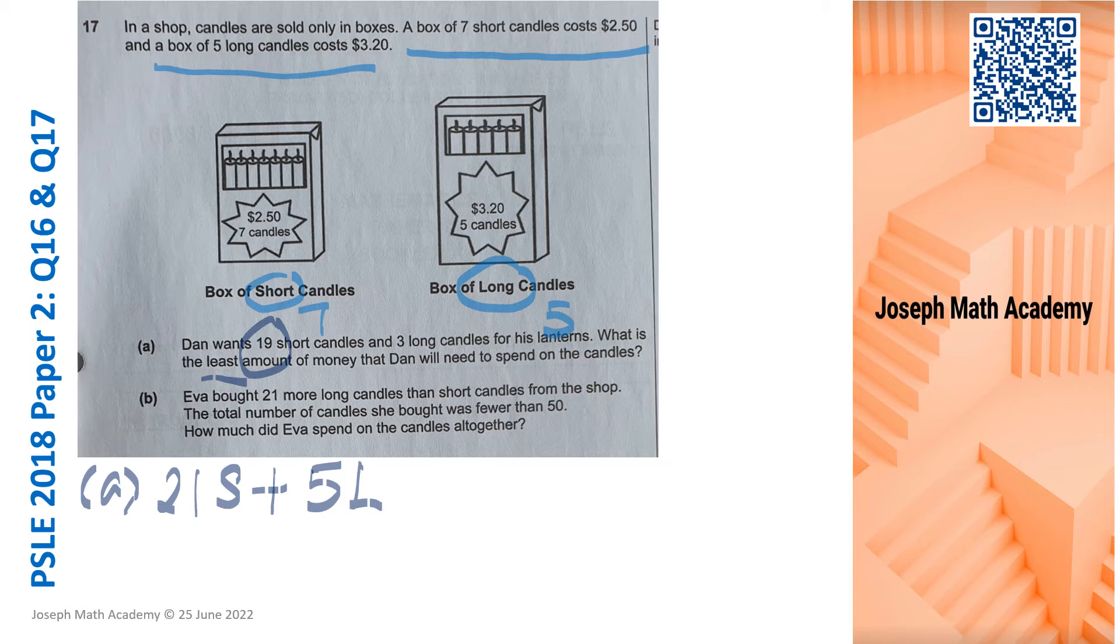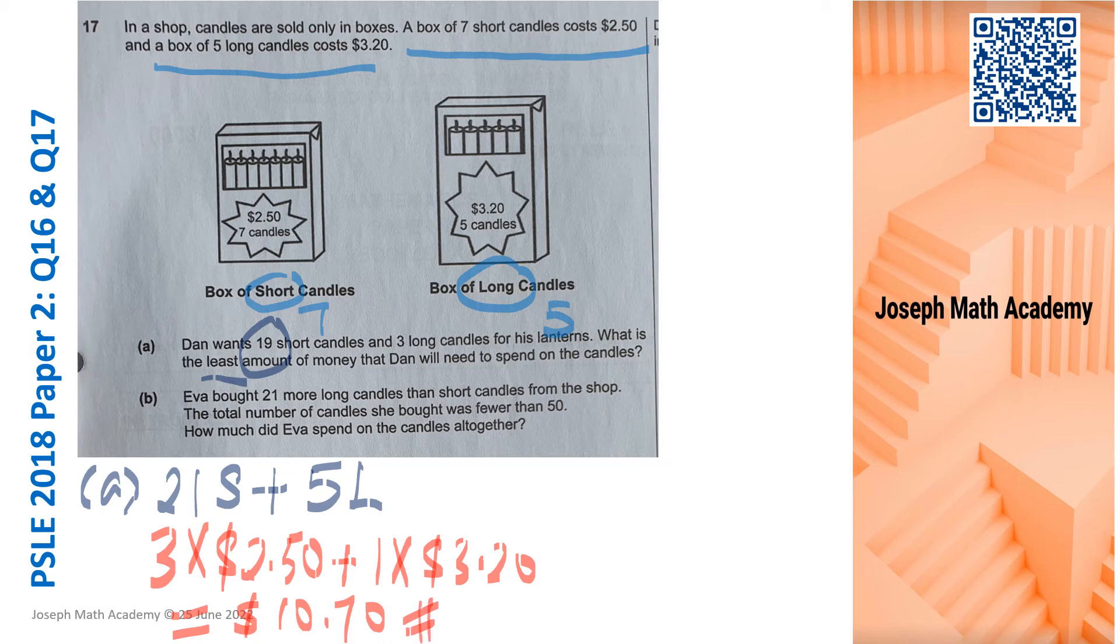So the multiples of seven, we need 21 short candles. For the multiples of five, it's just nice. That means he needs to buy a total of three small boxes and just one long box. So three times 2.50 plus 3.20. That gives us a total of 10.70. So part A is easily completed.